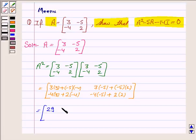29, minus 15 minus 10 is minus 25, minus 12 minus 8 is minus 20, 20 plus 4 is 24.